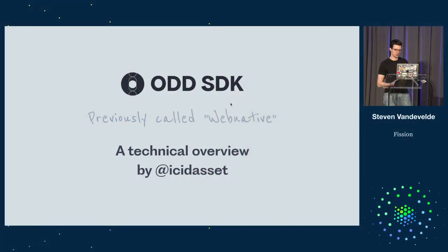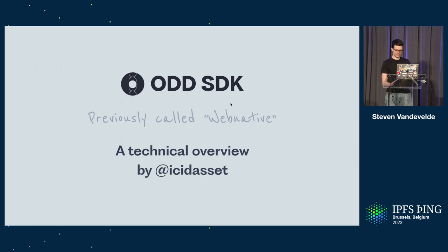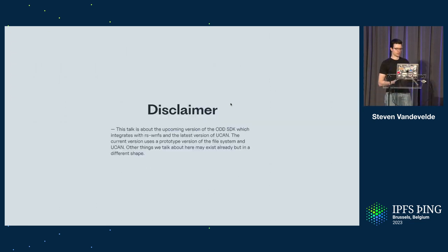Hi everyone. Today I'm going to talk about the Auth SDK, or as some of you know it, it was called WebNader before we renamed it this week. This talk builds on the previous talks of the Fission folks — like Philip did a talk on WinFS this morning — and this SDK builds around that. The current version of the SDK has a prototype of WinFS and UCAN. This presentation is talking about RS WinFS and introducing some new ideas.